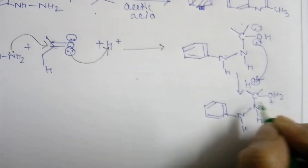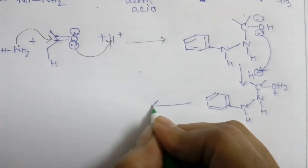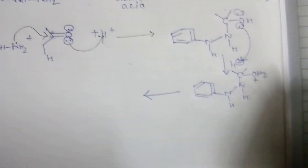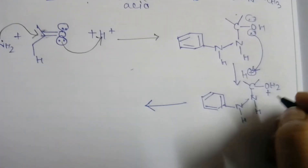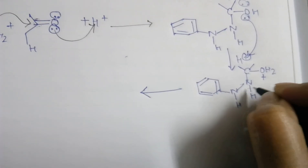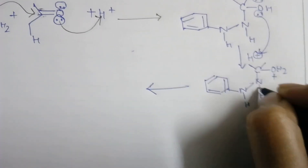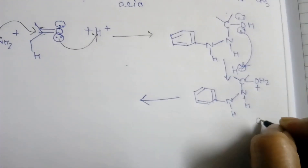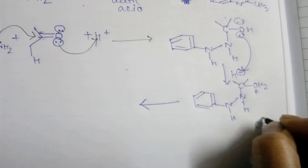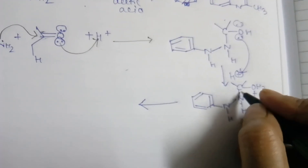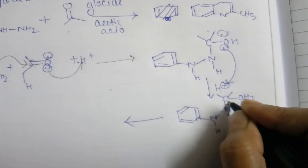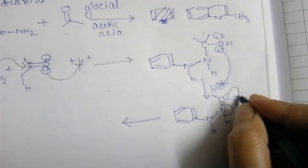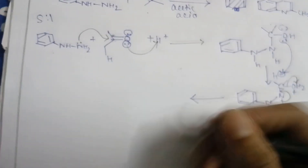As mentioned, an imine will form via enamine. Enamine means a C=C double bond adjacent to nitrogen — that bond is called enamine. To form the enamine, a C=C double bond needs to form, so this hydrogen will rotate and H2O will leave as a leaving group, and our required enamine is formed.